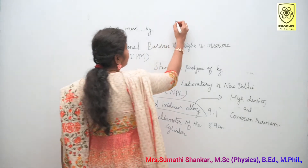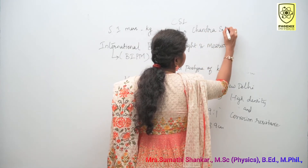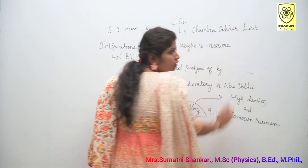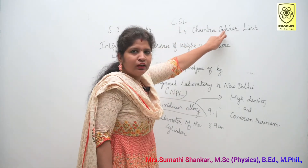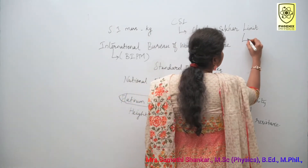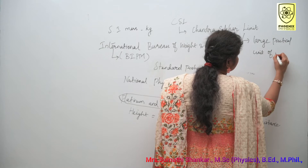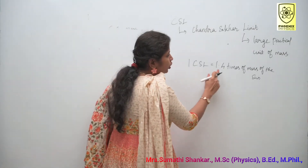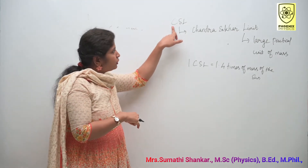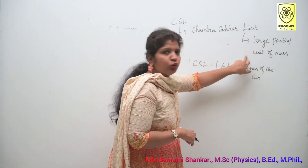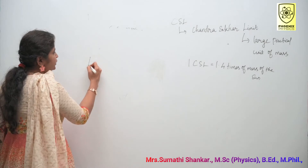Have you heard about CSL? What is CSL? CSL is nothing but Chandrasekhar Limit. The SI unit of mass is kilogram, but CSL is a large practical unit of mass. 1 CSL is equal to 1.4 times the mass of the Sun.